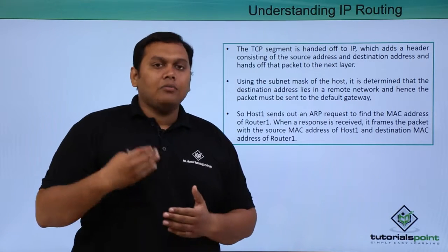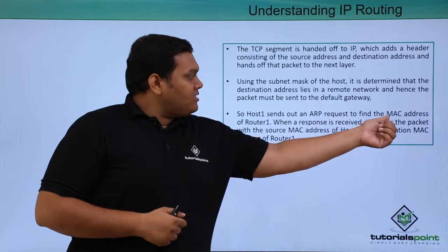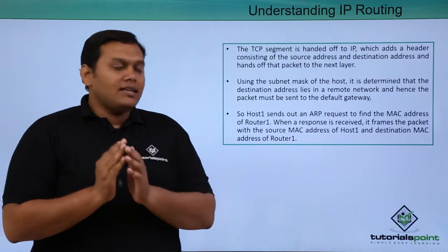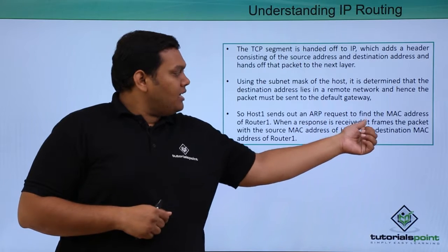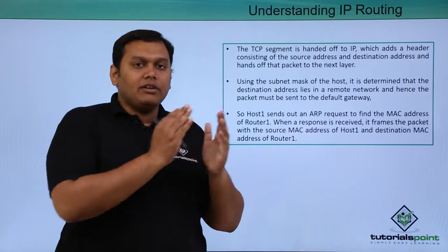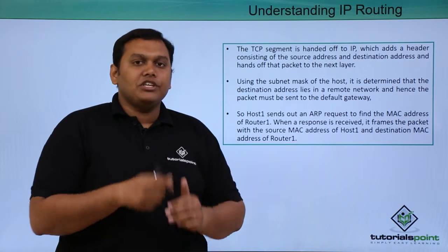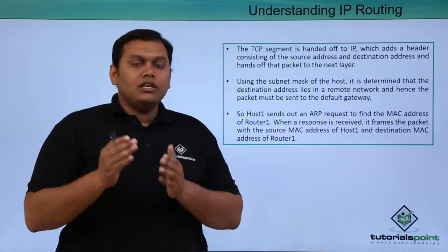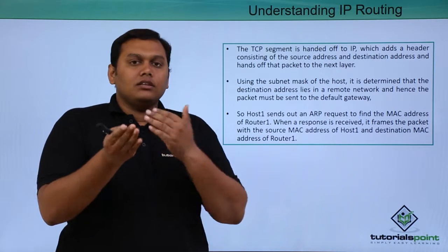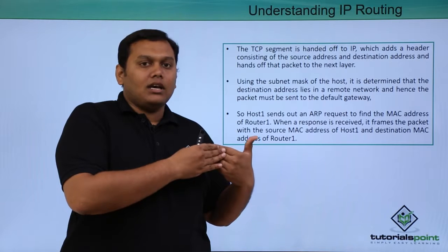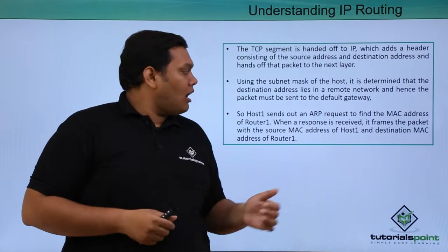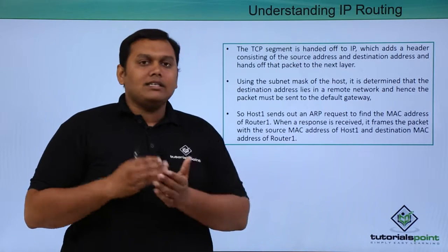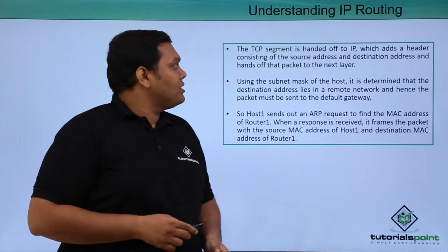Host 1 sends out an ARP request to find the MAC address of Router 1. When the response is received, it frames the packet with the MAC address details of the destination IP address and the address of Router 1. So Host 1 is the source IP address, and after the default gateway, the MAC address of Router 1 is used as the destination.